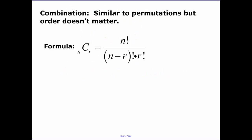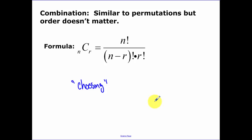Now, combinations are similar to permutations, but order doesn't matter. Think of it as just choosing things — like if I had those eight vases and I was choosing five, not ordering or lining them up. This is the formula for combinations, and it's in your calculator very similarly to where permutations were.